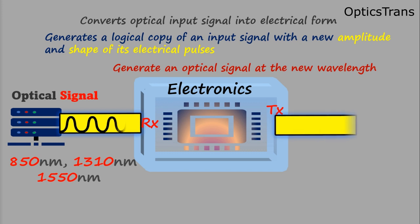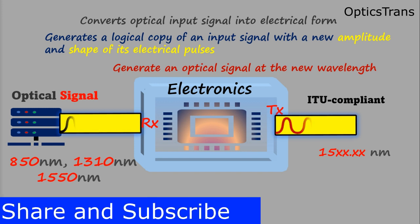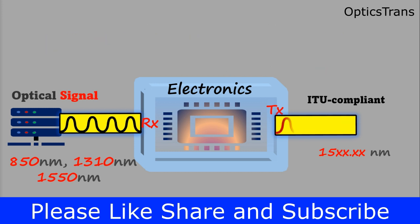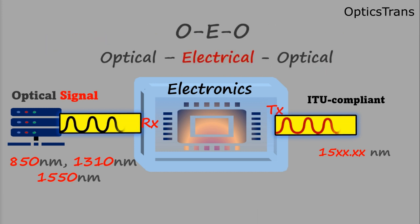This new signal drives a transmitter to generate an optical signal at a new wavelength toward the DWDM network. These wavelengths are ITU-T compliant, with C and L band, in the range of 15xx.xx nanometers onwards. This process is called OEO — optical to electrical, and then again optical.